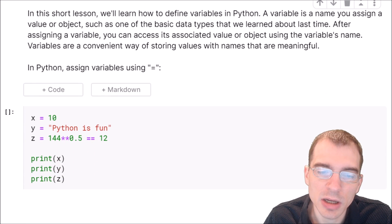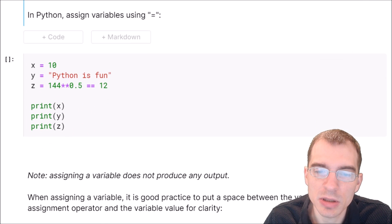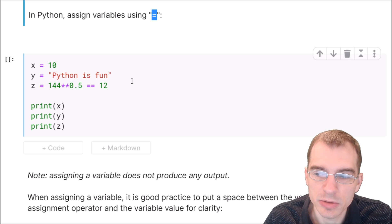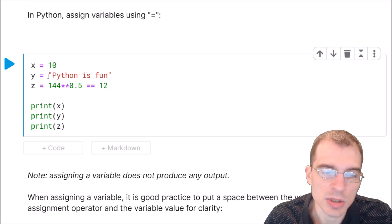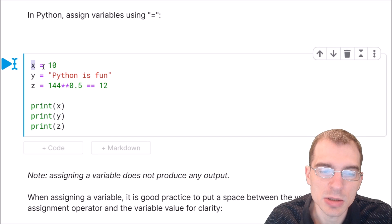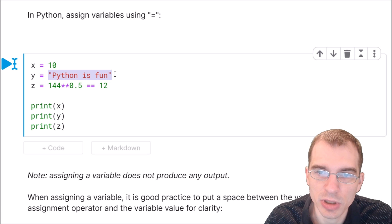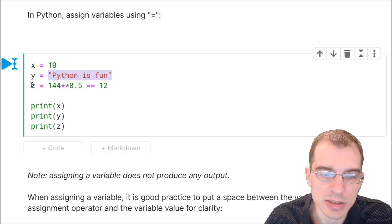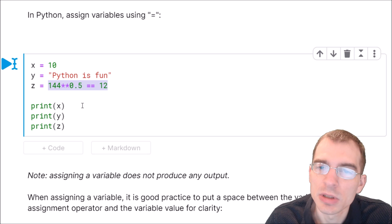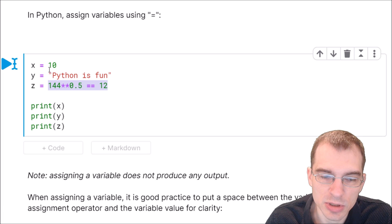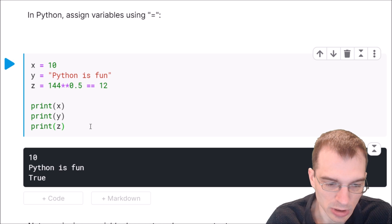In Python you assign variables using the equal sign. In this code cell here we're assigning the variable x the value 10. We're going to assign y the value Python is fun. Since this is quoted, this is a string value here, and we're going to assign z the result of this logical operation. So we're going to print the results here. We should see 10, Python is fun, and true, and that is what we get.